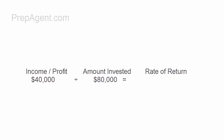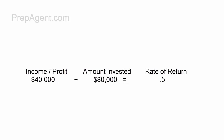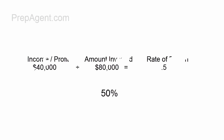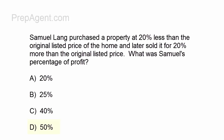So $40,000 divided by $80,000 gives you the rate of return. The rate of return is 0.5 on your calculator. Moving the decimal point over into a percentage, that is 50%.